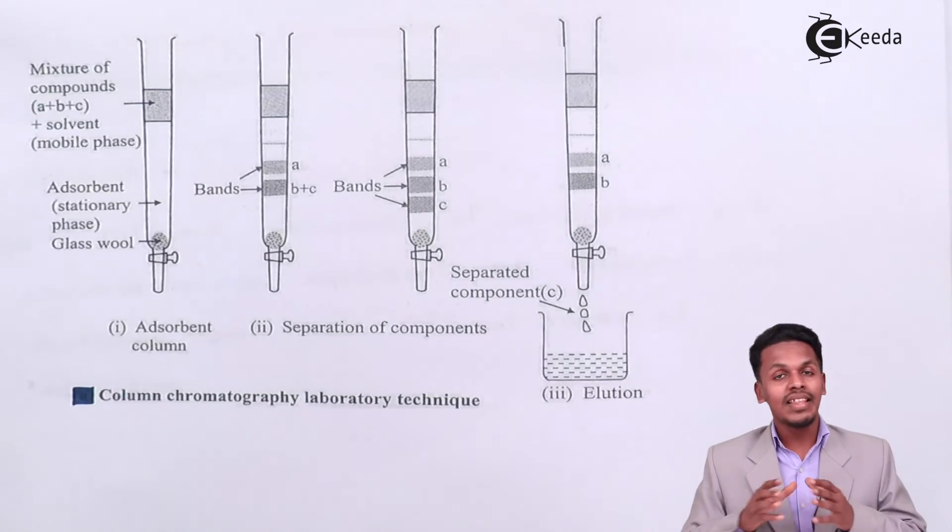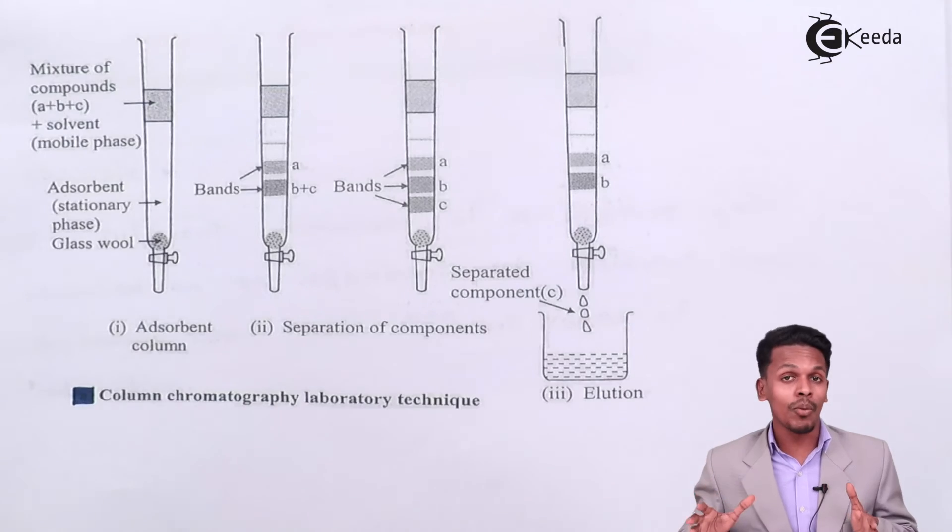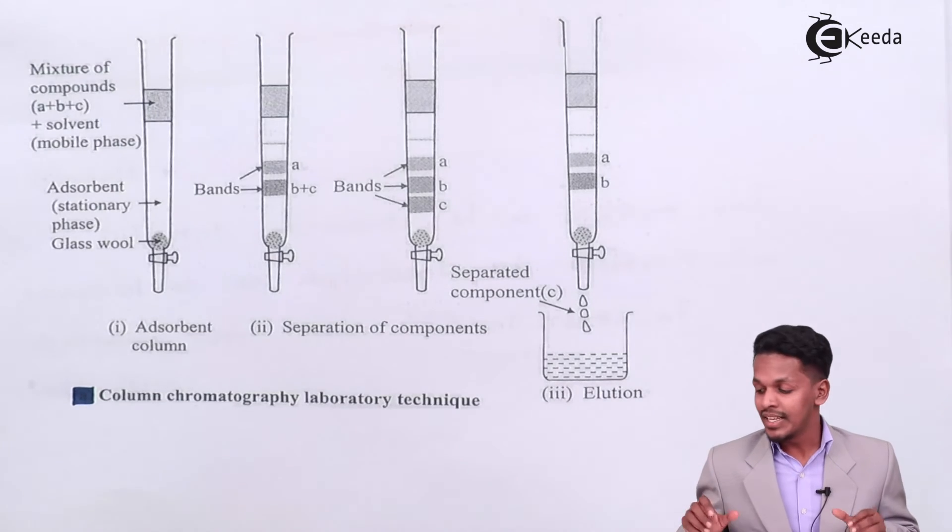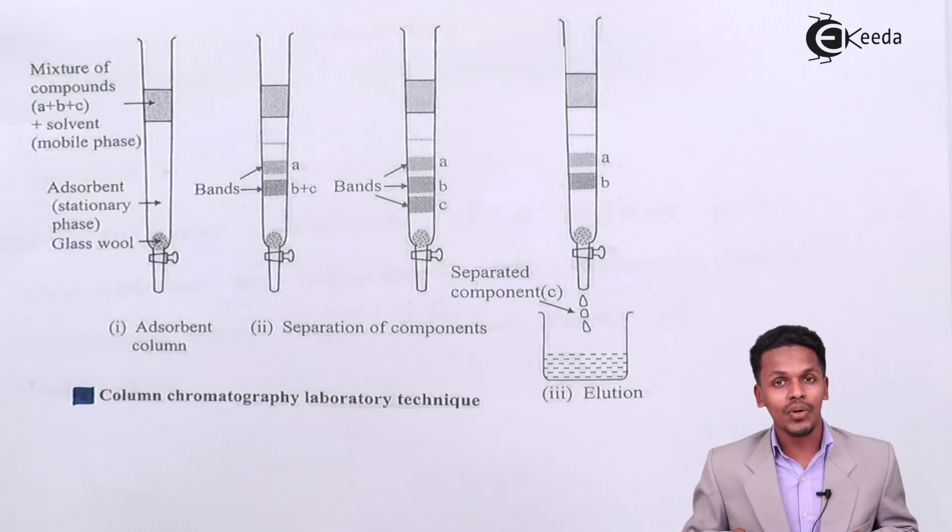So this is how basically the separation is done through column chromatography. And this column chromatography is a versatile technique that is basically used in this modern world. So that's it, and this is what we have to discuss about.